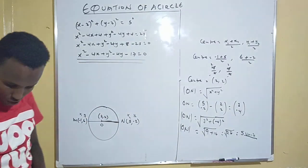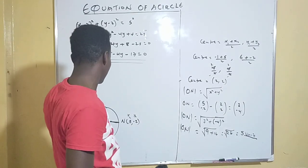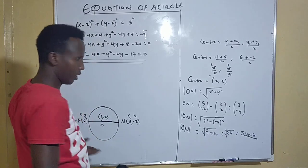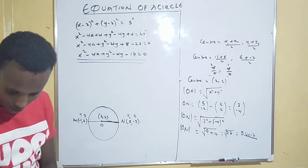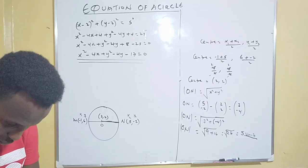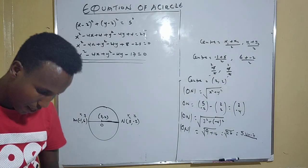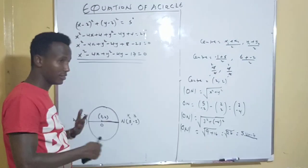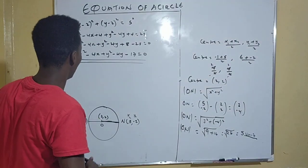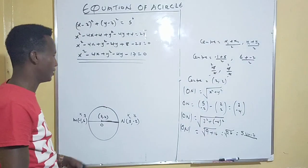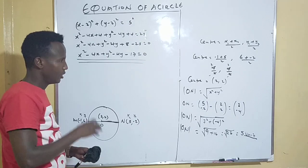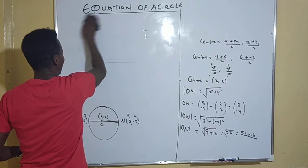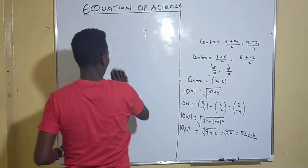That is how you solve this kind of question. Get the center first — the center means the midpoint — then get the radius by finding the magnitude of OM or ON. These KCSE questions are actually more straightforward than other exams, so make sure you follow along carefully.